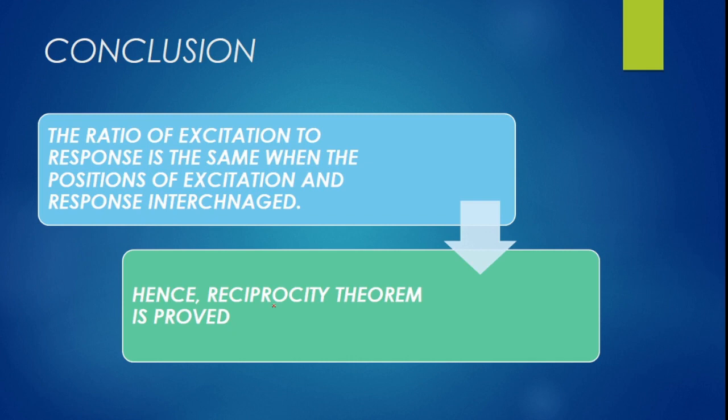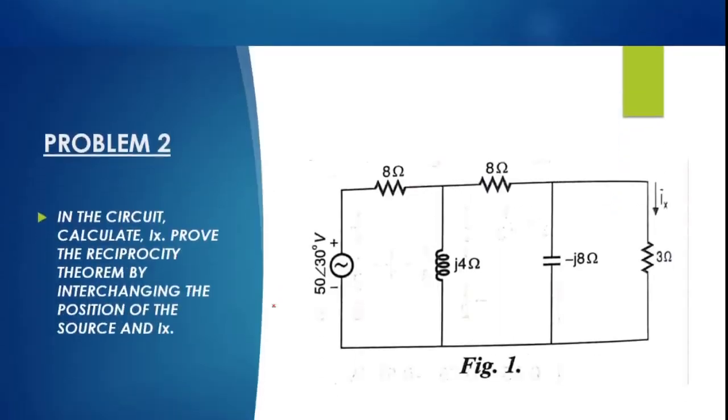To summarize verification of reciprocity theorem: keep the source at one port and measure the response at the second port to find the ratio. Then interchange the positions of excitation and response, and check whether the ratio of input to output is the same. If both ratios are equal, reciprocity theorem is verified.